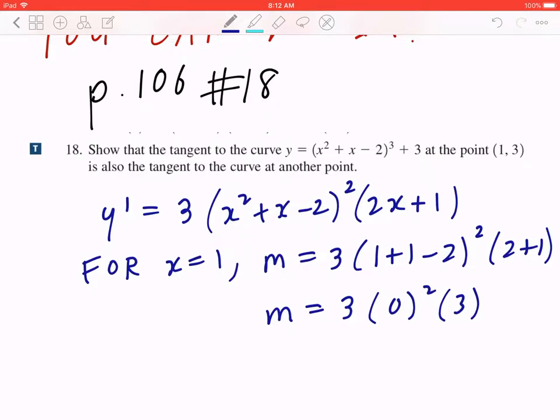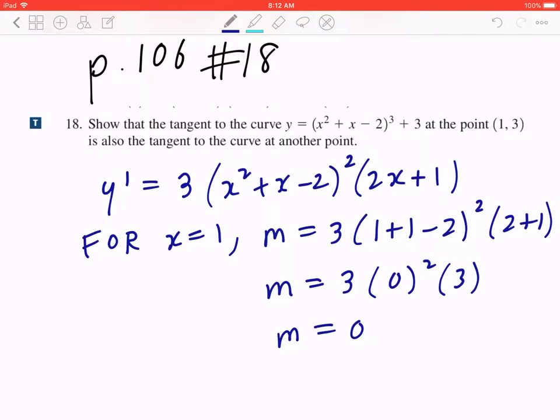Which means the entire slope, when you work it out, is going to be 0. So this means it's going to be a horizontal line.